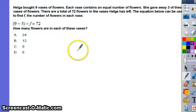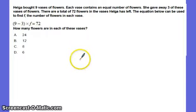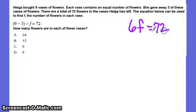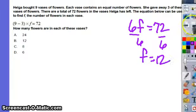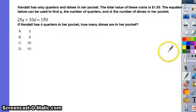Helga bought 9 vases of flowers. Each vase contained an equal number of flowers. She gave away 3 of these vases of flowers. There are 72 total flowers in the vases that Helga has left. The equation below can be used to find F, the number of flowers in each vase. How many flowers are in each of these vases? So all of this to say, solve this equation. 9 minus 3 is 6. So we have 6F equals 72. Divide both sides by 6. F is equal to 12.